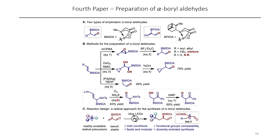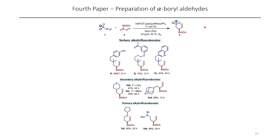In this paper, they end up generating radicals from BF3K salts to add them into Michael acceptors. They are able to introduce both tertiary, secondary, and primary alkyl trifluoroborates containing a number of interesting functional groups. When you compare this to the starting material, you can clearly see that there's a lot of new functionality introduced, and this isn't probably a way you'd normally think to form a quaternary center. So this is pretty good, and you also still have this boron group which you could do subsequent transformations on.